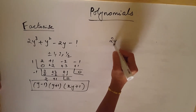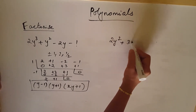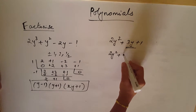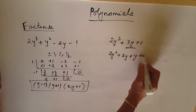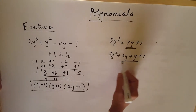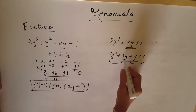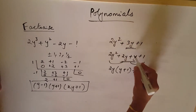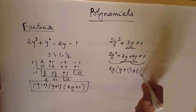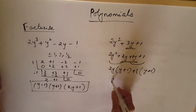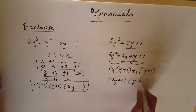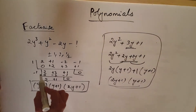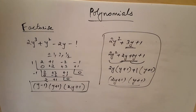You can also verify: write 2y squared plus 3y plus 1, split 3y into 2y plus y plus 1. Take 2y common from the first pair: 2y times y plus 1. Take 1 common from the second pair: 1 times y plus 1. So it factors as 2y plus 1 times y plus 1. You can do it either way — whichever is convenient.